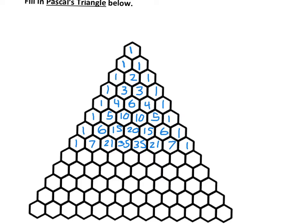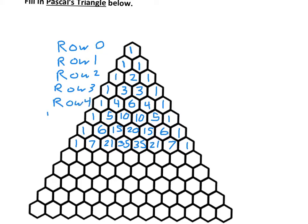So a few things I want you to notice. Let me tell you how the rows work — the top is row 0, and then it goes from there: row 1, row 2. One thing I want you to notice is that every row is symmetrical. Look at row 3, for example — it starts with 1, 3, and ends with 3, 1. Row 5 starts with 1, 5, 10, ends with 10, 5, 1. So every row is symmetrical.